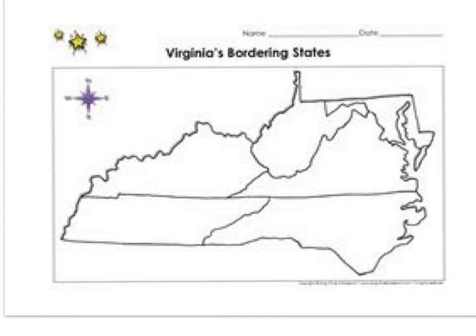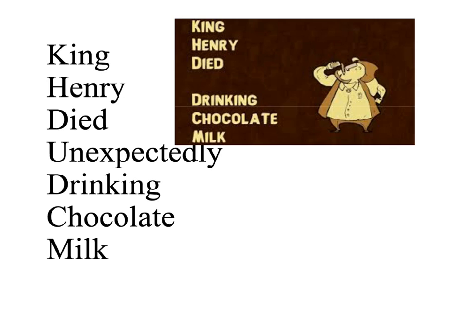We used a mnemonic device when we studied the states that surround Virginia. And like the mnemonic device we used to memorize the states that surround Virginia, we're going to memorize one for the metric units. In this case, it's going to be King Henry died unexpectedly drinking chocolate milk. Would you go ahead and copy that down?